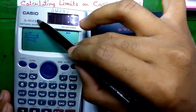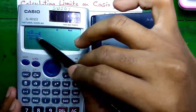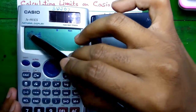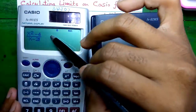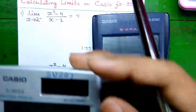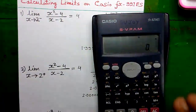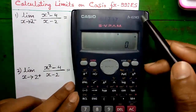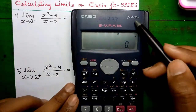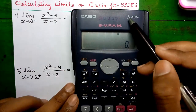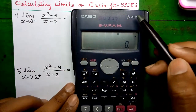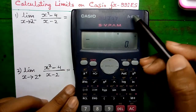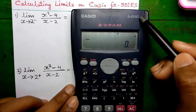If we have the FX-990ES calculator, you can directly form the expression on that calculator and calculate the value of the expression for each particular value of x. However, that is not directly possible on this calculator. You can't form the expression directly, but you can find out the value of the limit with a little modification.